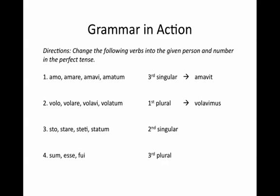Now for number three: sto, stare, stati, statam. This is a slightly irregular verb because our third principal part doesn't follow our normal pattern — it's not ending in 'avi,' instead it's 'eti.' But it doesn't matter; we still follow our same rules. We go to that third principal part, drop our 'i,' and that gives us our stem. We add our second singular ending and it's statisti — 'you have stood.'